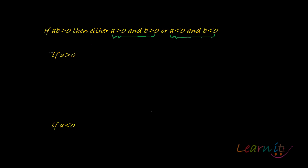How do we prove this? We have that a·b is greater than zero, so both numbers cannot be equal to zero. We start by noting that a does not equal zero — otherwise a·b would have been equal to zero if either of them were zero.